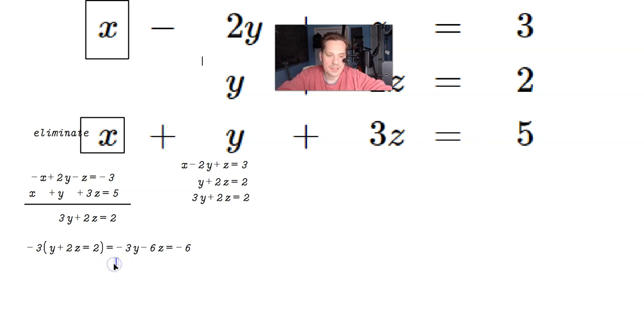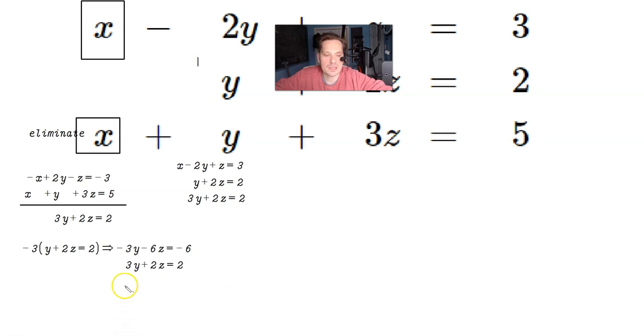Now take this equation and add it to the bottom equation, which is positive 3y plus 2z, which equals positive 2. Just add these equations term by term, straight down, like this.